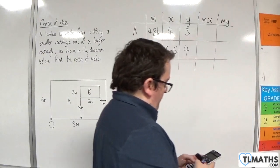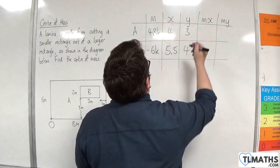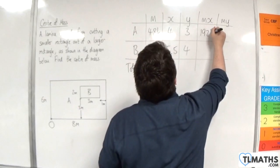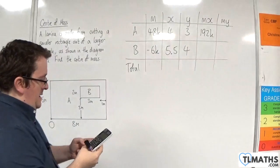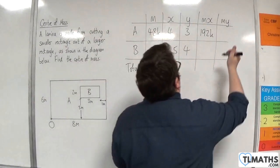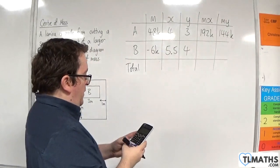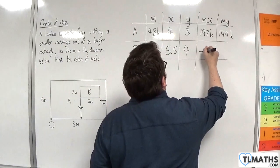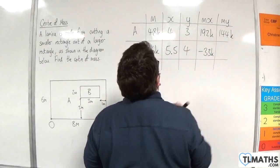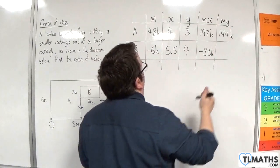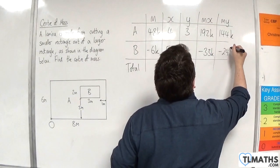OK, so we've got 48 times 4, so 192k in there. 48 times 3, so 144k there. We've got 6 times 5.5, so minus 33k there. And minus 24k there.